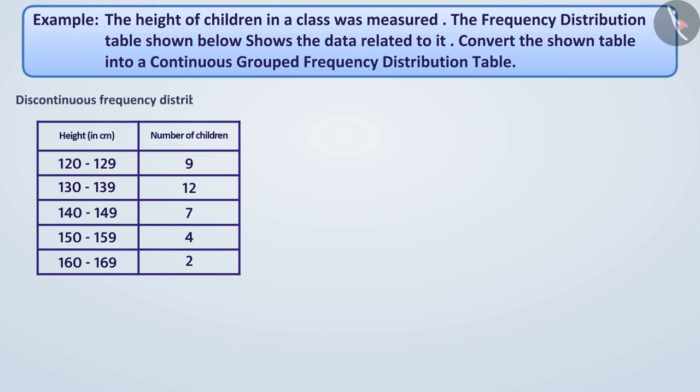The table shown below shows the discontinuous frequency distribution because the class intervals here are non-overlapping. That means there are gaps between upper and lower limits of two consecutive class intervals. Suppose the height of a child is 129.5 cm. Then in which class interval will it be included in the table?